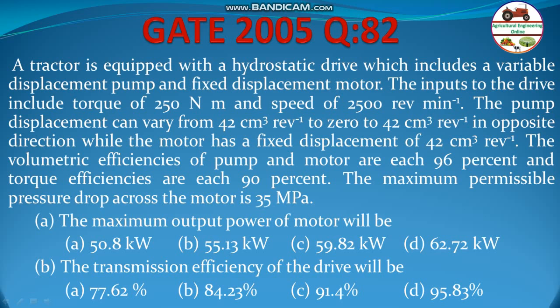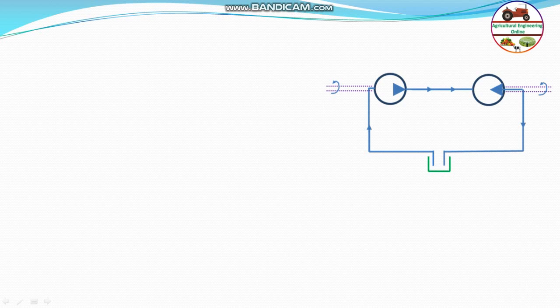This problem is about the hydraulic transmission system. In the hydraulic transmission system, there will be a pump and a motor. The pump is driven by the tractor engine or shaft power. Let this be the shaft power input, and this is the pump, and this is the motor.